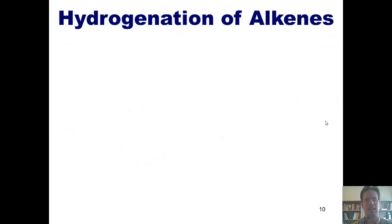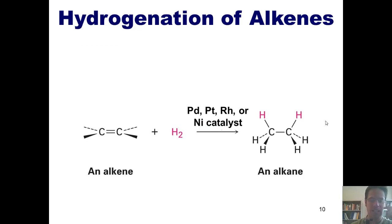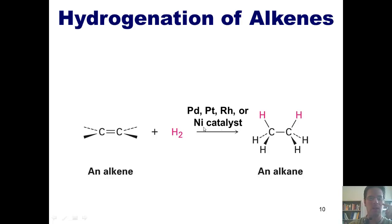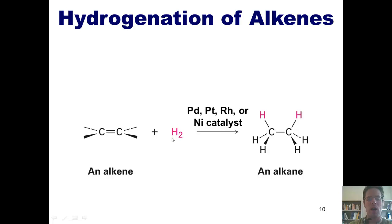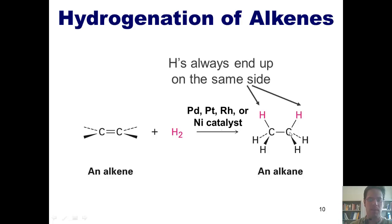Returning to the hydrogenation of alkenes: if you take an alkene and treat it with hydrogen gas, H2, and one of these four transition metal catalysts — palladium, platinum, rhodium, or nickel — it converts the alkene into an alkane by placing the two hydrogens on the same face as each other, that is, cis to each other.